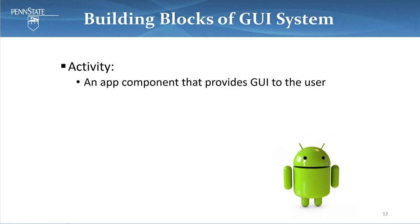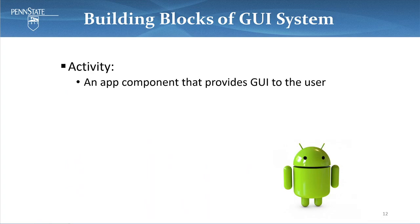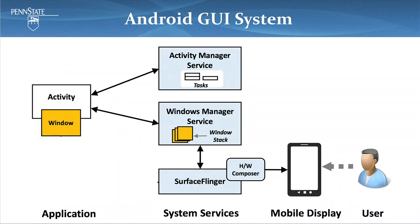The building block of the GUI system is the activity. Activity is an app component that provides GUIs to users and is a fundamental driver for app navigation. A window in concept is a visual area on the screen that presents graphic contents, and in practice it is a container to hold all GUI components. Activity must hold a window to be meaningful and useful. This diagram shows the major components of the GUI system.